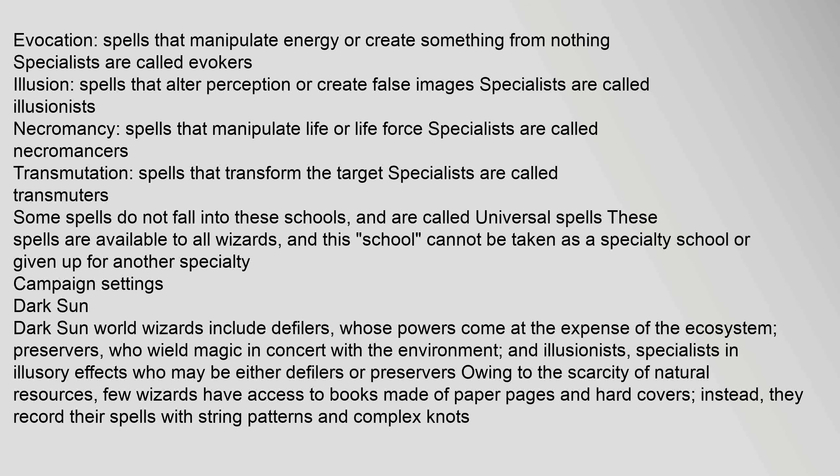In the Dark Sun campaign setting, wizards include defilers, whose powers come at the expense of the ecosystem; preservers, who wield magic in concert with the environment; and illusionists, specialists in illusory effects who may be either defilers or preservers. Owing to the scarcity of natural resources, few wizards have access to books made of paper pages and hard covers; instead, they record their spells with string patterns and complex knots.